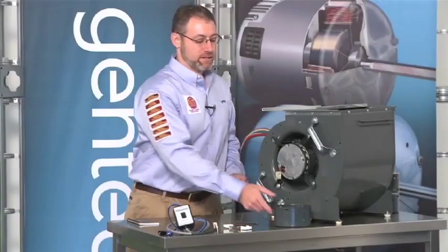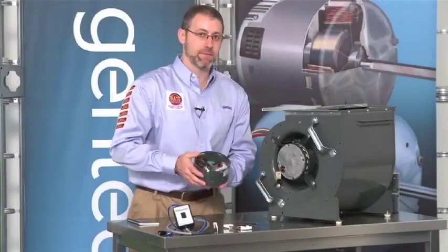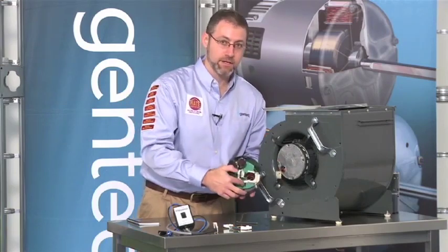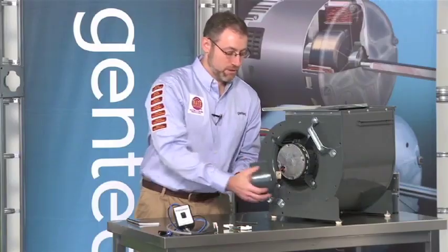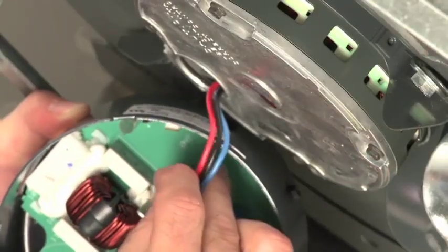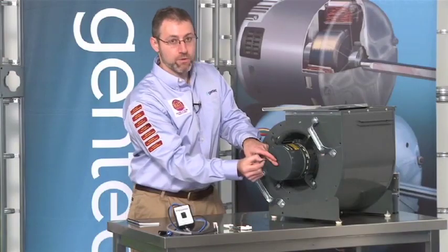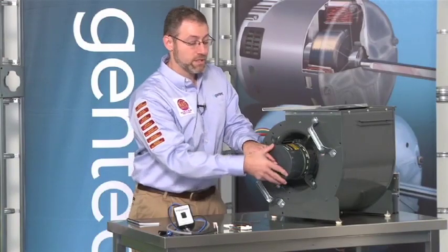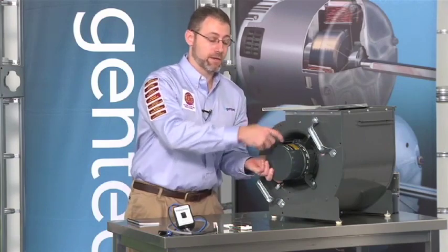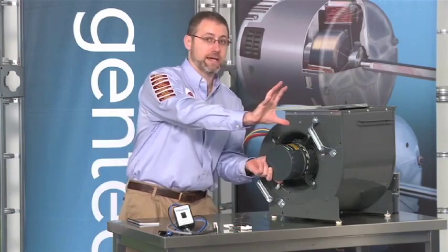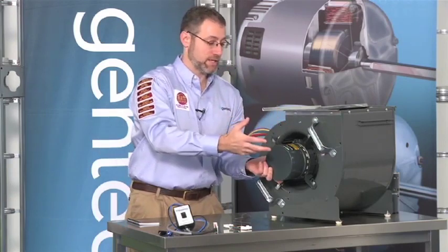So if we're only replacing the control, again, keep in mind that before we put the control back on, we do need to plug that 3-pin connector back into the control. So we would plug the 3-pin connector back into the control, rock the control up to the motor, put in our 2 quarter-inch hex head bolts, and we'd be ready to connect the wiring back to the motor. Of course, making sure that these connectors, as this blower section goes back into the appliance, are facing down.